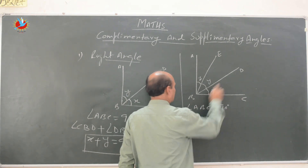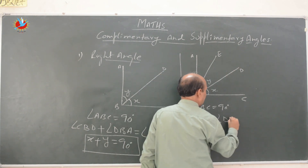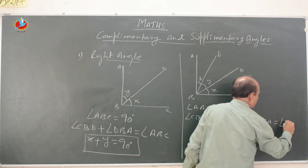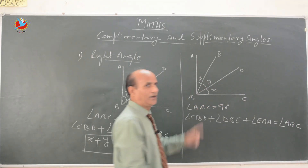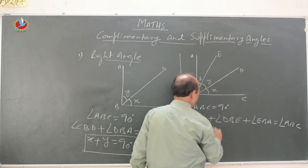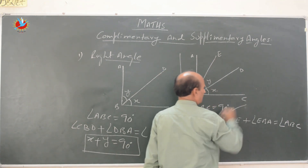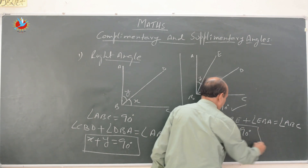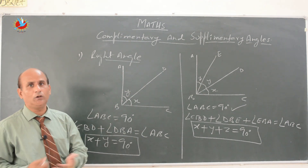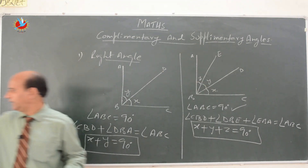Angle CBD is X, angle DBE is Y, and angle EBA is Z, and angle ABC is 90 degrees. So if we divide one right angle into different parts — whether two parts, three parts, or four parts — the sum of all the parts must be equal to 90 degrees.